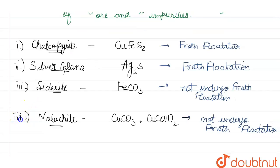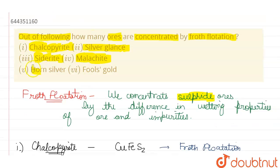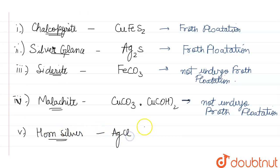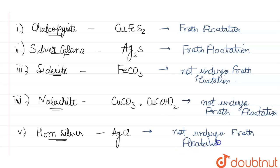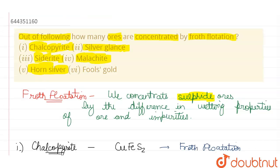The next compound is horn silver, which is AgCl. In AgCl we do not have a sulfide part, so it will also not undergo froth flotation.